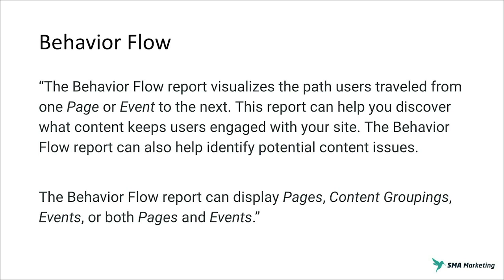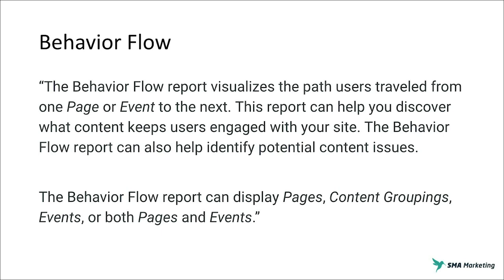When using behavior flow, you're really looking at engagement from page to page — how people are moving through your site and what types of behavior they're taking. If you've set up events in analytics, you can actually see if they're clicking, downloading, or scrolling. That data can be layered into your behavior flow to give you a better picture of how somebody is taking a journey through your site and content. To find the behavior flow report, go to the left-hand column, select Behavior, and select Behavior Flow.